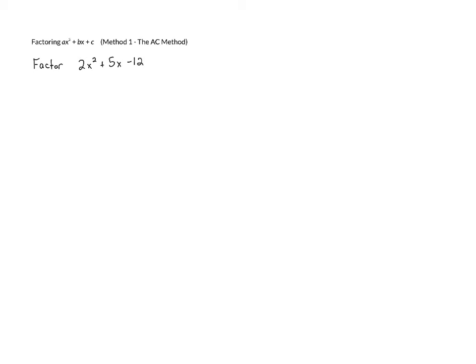And in fact, there are two different methods that we can use to factor trinomials in this form. In this video, we're going to look at the first of these methods, which is the AC method. In the next video, we're going to look at the other method, which is called trial and check.